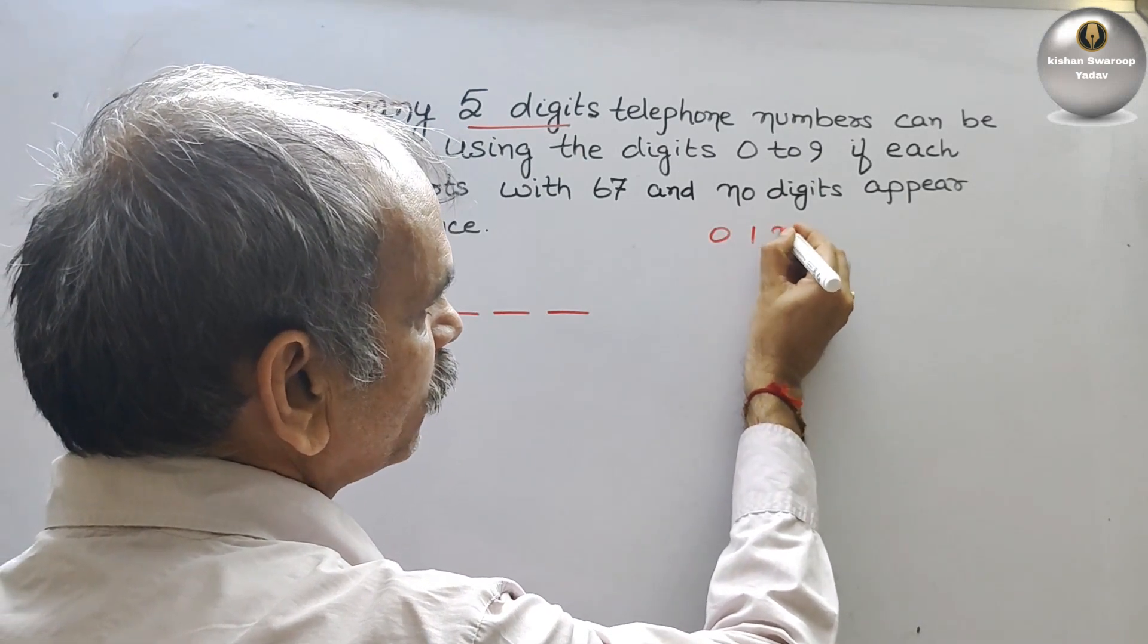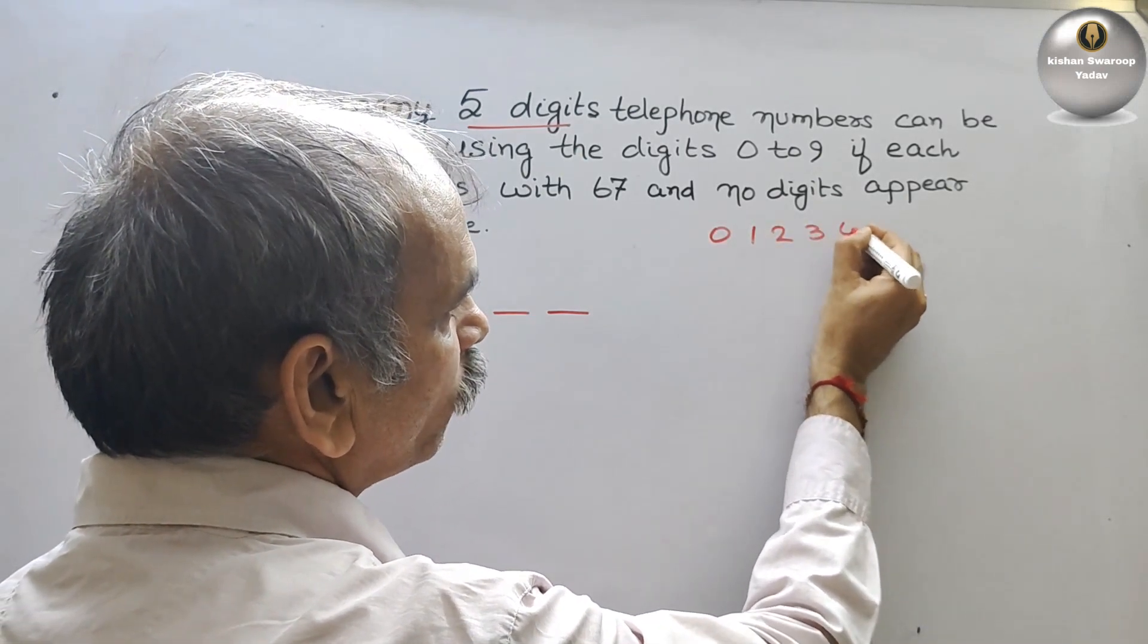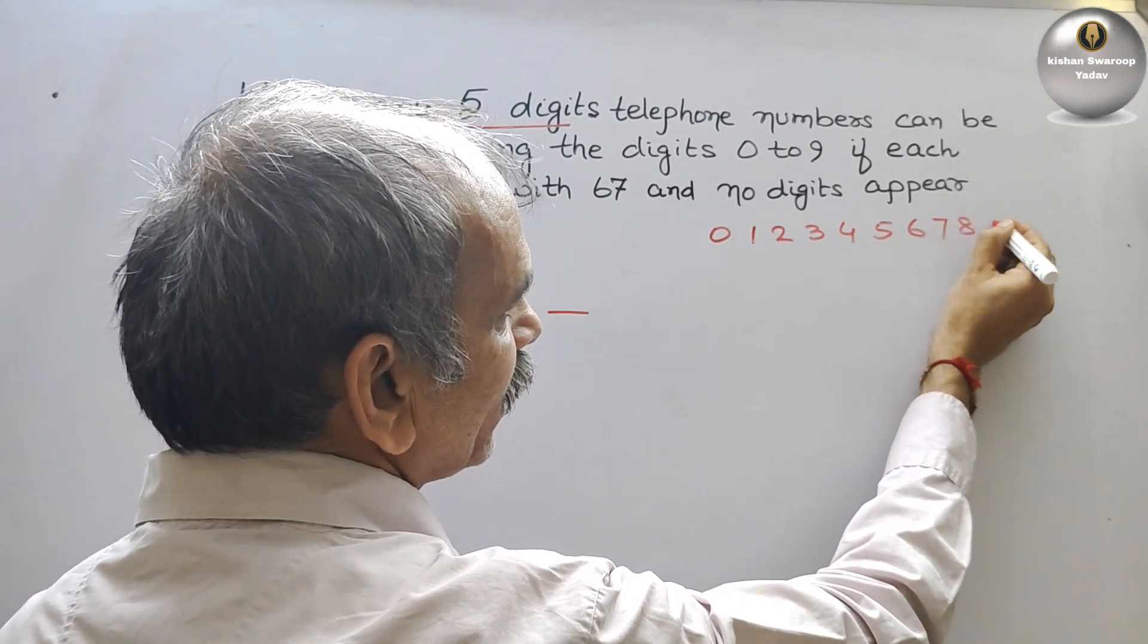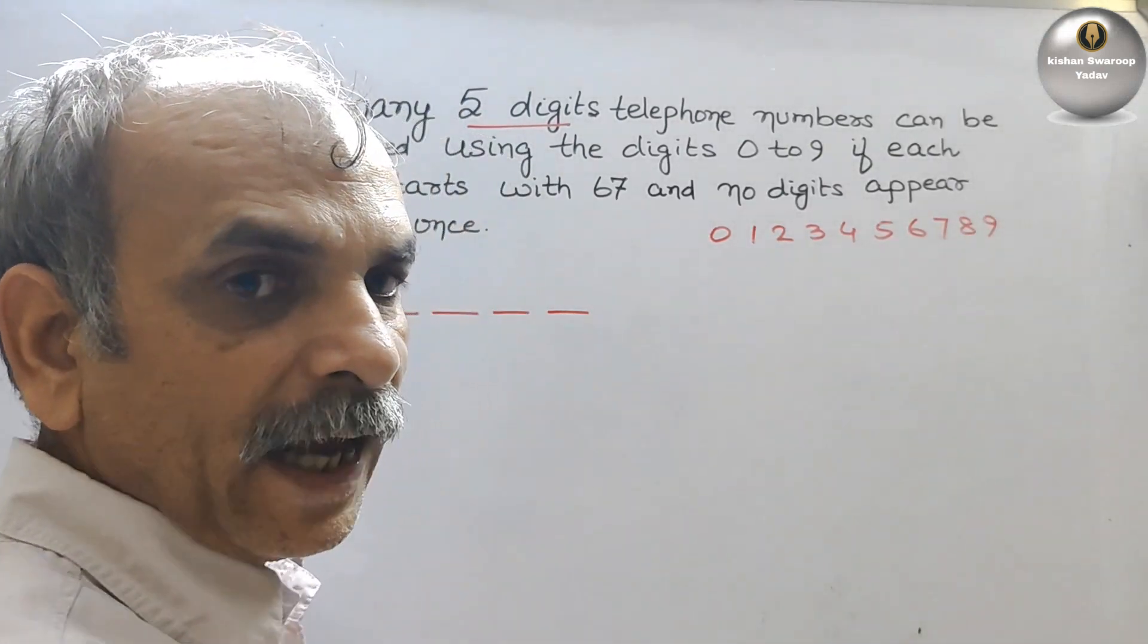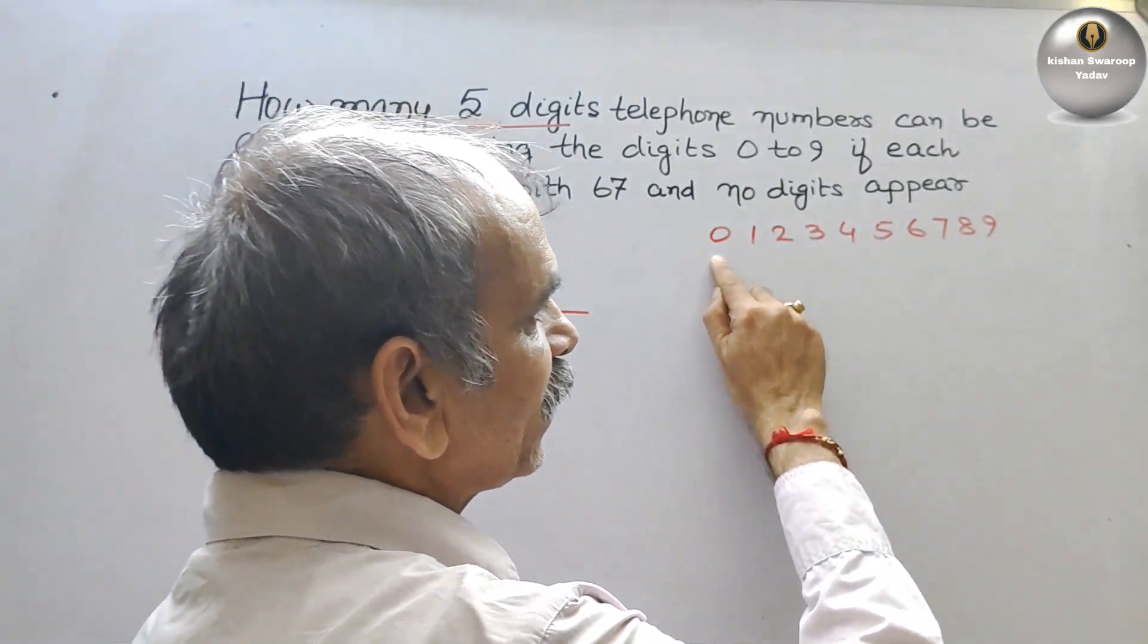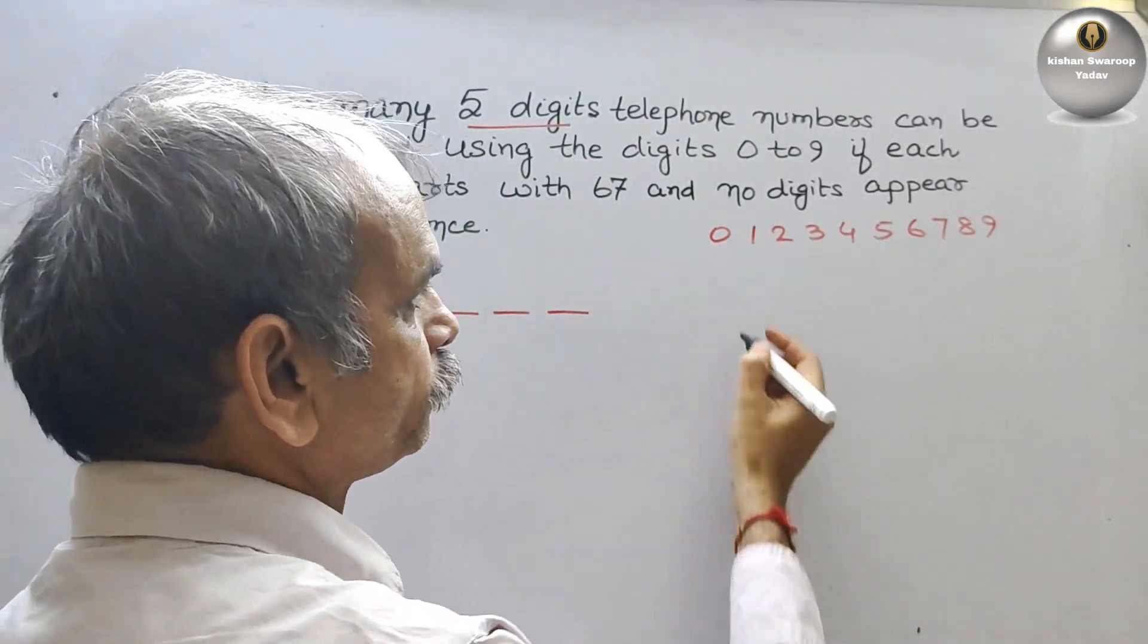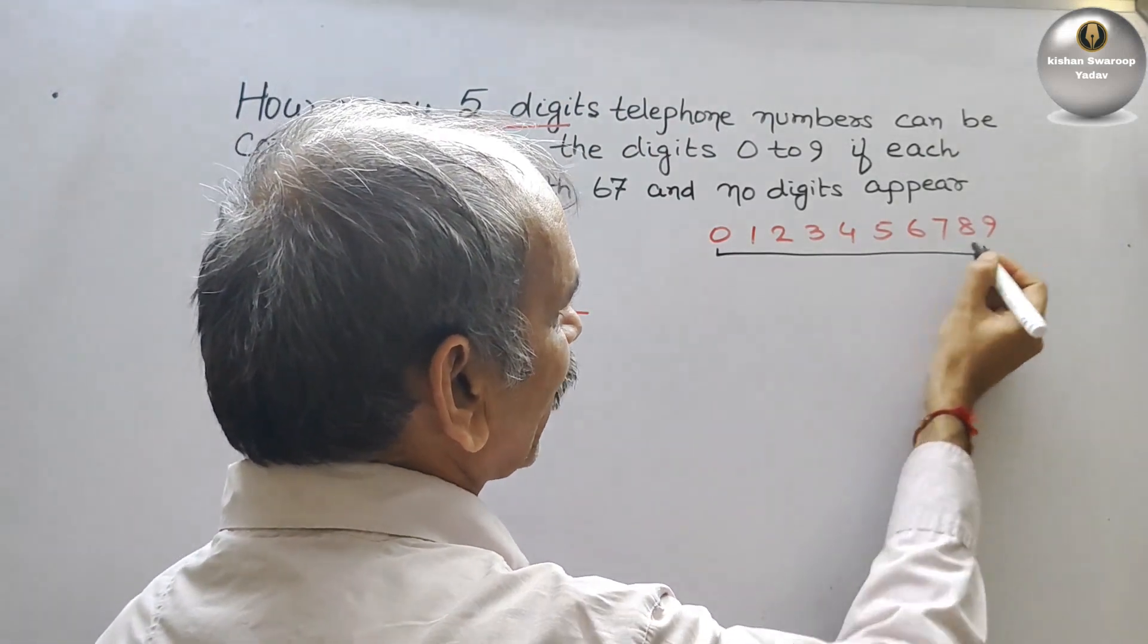0, 1, 2, 3, 4, 5, 6, 7, 8, and 9. So therefore we can say this is nothing but the total of 10 numbers. These are your 10 numbers.